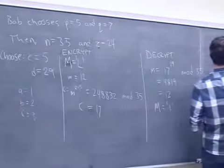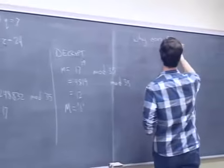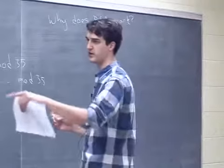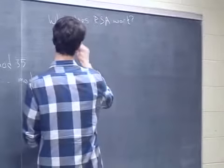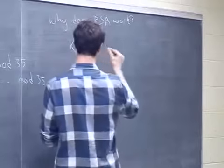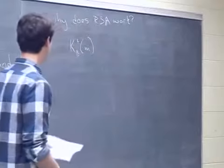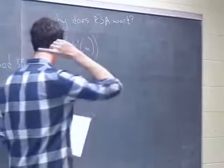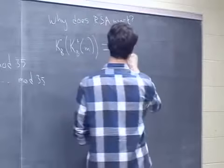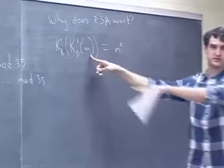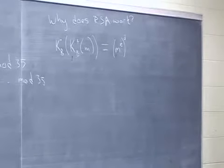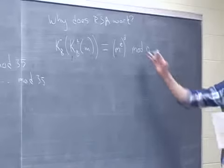Why does RSA work? When we encrypt and then decrypt, we apply Bob's public key as a function (encryption raises to e), then apply his private key (raises to d), all still mod n. We need to manipulate this expression. To do that, we'll use a theorem from number theory.